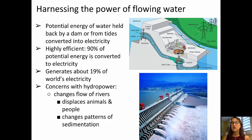Turning to harnessing the power of flowing water: there's a lot of potential energy in water held back by a dam or from tides that can be used to generate electricity. Hydropower is highly efficient, with about 90% of potential energy converted to electricity, and about 19% of the world's electricity is already generated this way. Concerns with hydropower include changing the flow of rivers, which often displaces animals and people, and changing patterns of sedimentation. The bottom picture shows the Three Gorges Dam recently built in China, and the top diagram shows how a hydropower plant works.